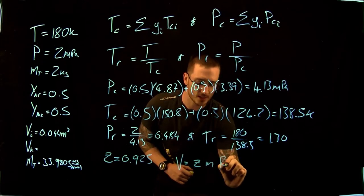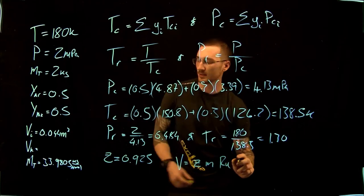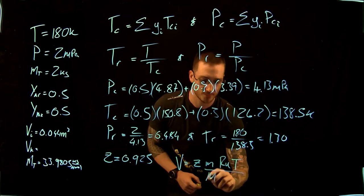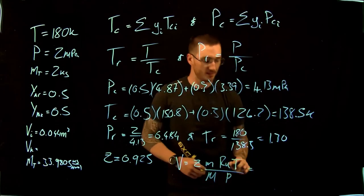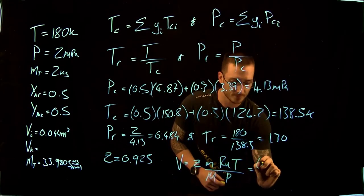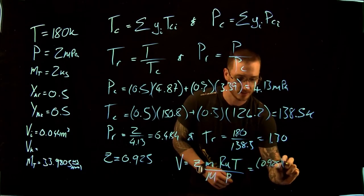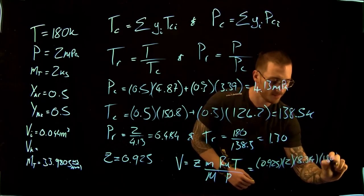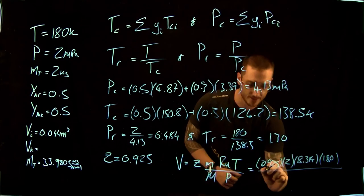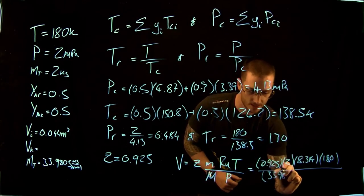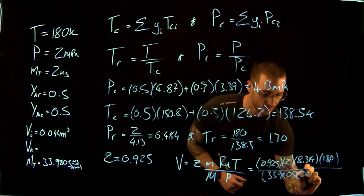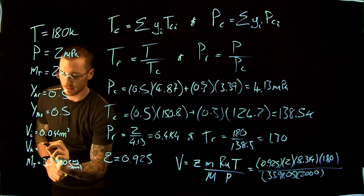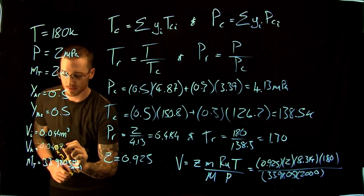Our volume equals Z times mass times R_specific (which is R_universal divided by the molar mass of the mixture) times temperature divided by pressure. This gives us 0.925 × 2 × 8.314 × 180 divided by 33.9805 × 2000, and we get a volume of 0.0407 m³.